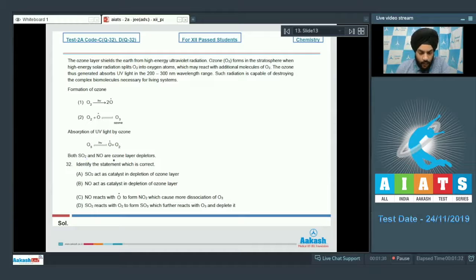Question 32: Both SO2 and NO are ozone layer depletors. Identify the correct statement. Option A: SO2 acts as catalyst in depletion of ozone layer - this is not correct, they do not act as catalyst. Option B: NO acts as catalyst in depletion of ozone layer - this is also not correct. What NO does is react with the O atom which is formed to form NO2, which causes more dissociation of O3. So the third statement is correct.